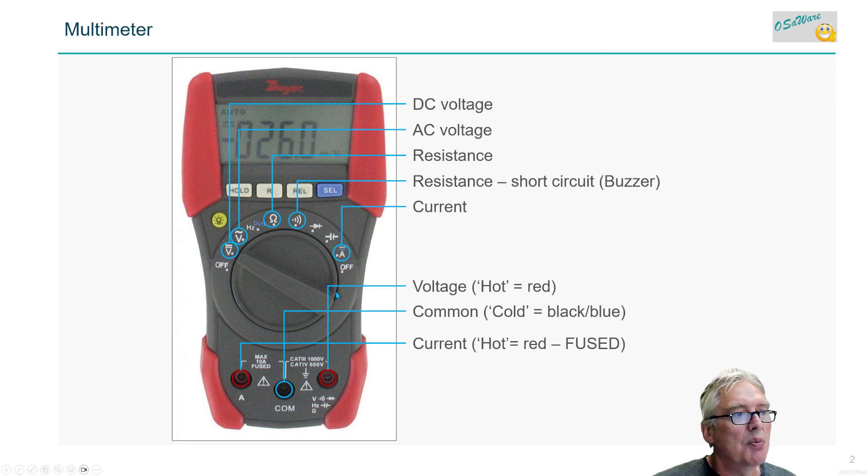We have voltage for hot and then common that we have to connect, so we have two wires to measure voltage. Then we have a current wire which is not the same - it's fused in case you try to measure high current. You're not going to destroy your element, but you have to change the fuse.